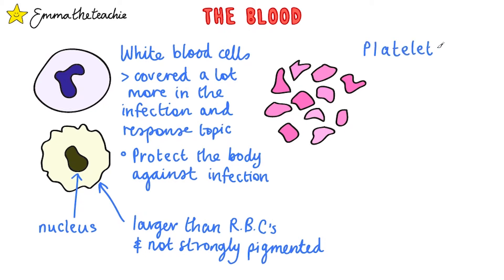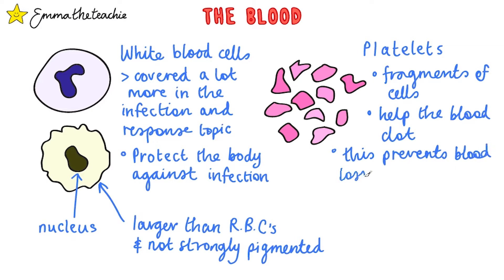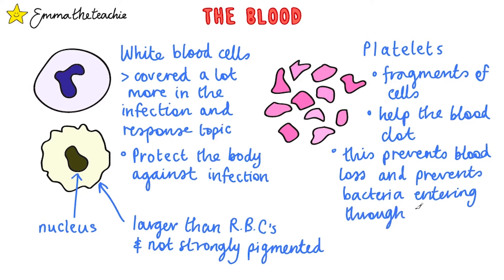Finally, we've got platelets. These are fragments of cells, and their function is to help the blood clot. This is important when a person gets wounded, as it helps prevent blood loss and forms a scab that prevents bacteria from entering the body. As they're fragments of cells, they're quite a lot smaller than red or white blood cells — so this is how you can identify them.